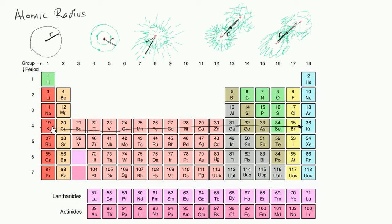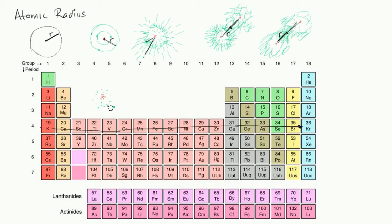When you're at potassium, you have 19 protons and 19 electrons. But you only have 1 electron in that outermost fourth shell. Let's just say that's that electron — just to visualize it. So that 1 electron out there, and you have 19 protons. There's going to be a Coulomb force that is attracting it, that is keeping it there.